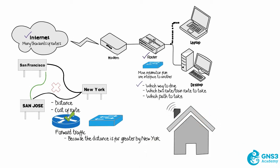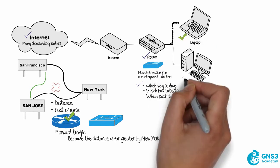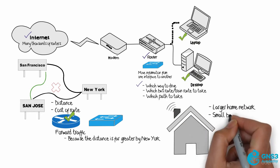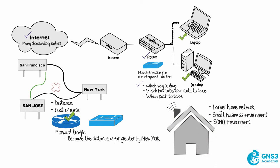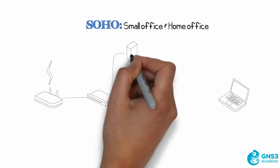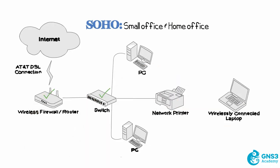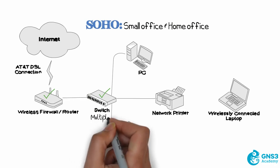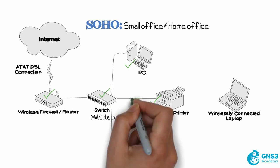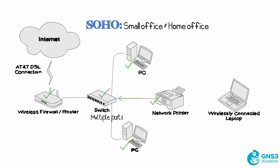Your home network may consist simply of a router with some iPads, laptops, and desktops, or you may have a larger home network, or work in a small business or SOHO environment. SOHO is small office home office. In an environment like this, you may have a router connected to a device called a switch. A switch essentially gives you multiple ports or interfaces that you can connect devices to. In this example, we have a network printer and two PCs connected physically via a cable to a switch, which in turn is connected to the router.